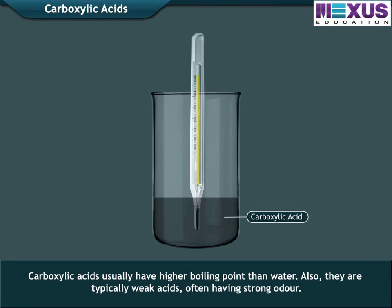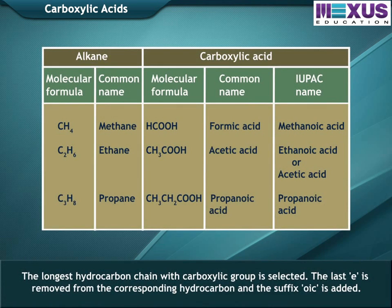Carboxylic acids usually have a higher boiling point than water. They are typically weak acids, often having strong odors. The longest hydrocarbon chain containing the carboxylic group is selected for naming. The last 'E' is removed from the corresponding hydrocarbon name and the suffix '-oic' is added.